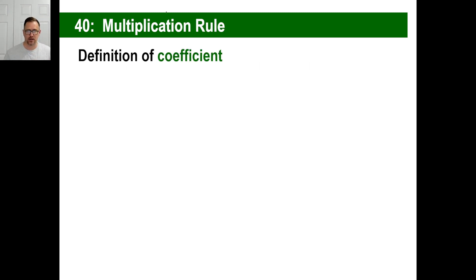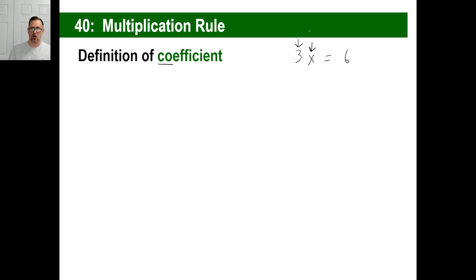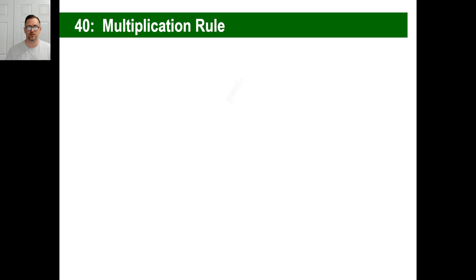A coefficient. 'Co' means like along with — co-president, co-sponsor, and so on. A coefficient is something like this: if you have 3x equals, let's say 6, the x is the variable, and 3 is the coefficient — the numeral that goes along with the variable. We'll see tons of these.